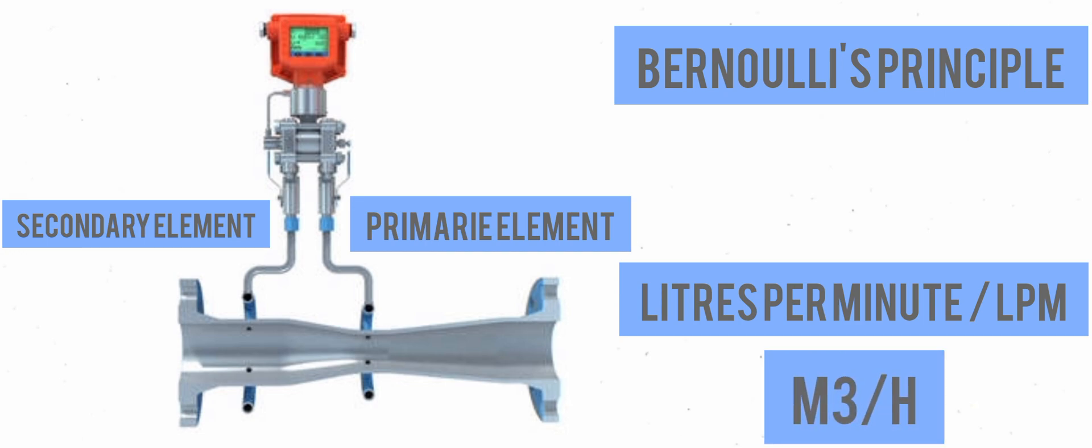Using DP transmitters as a method to measure flow works best on fluids that are relatively clean and of low viscosity. Differential pressure flow transmitters support a small span or range which is why they are very commonly used in water and wastewater applications.